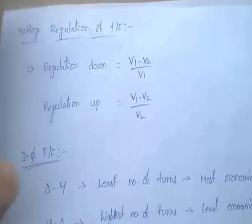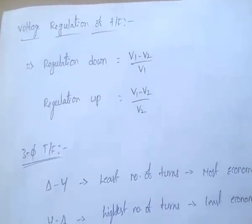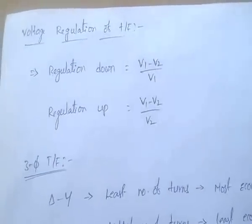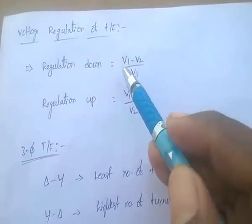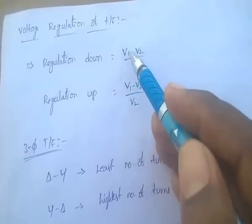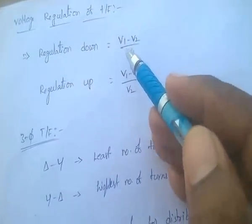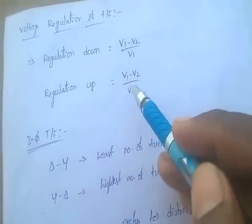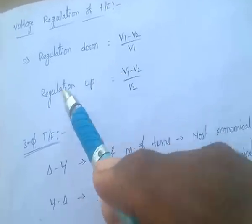Voltage regulation of a transformer: regulation down is (V1 − V2) / V1, meaning from no-load to full-load divided by no-load. Regulation up means no-load to full-load divided by full-load.